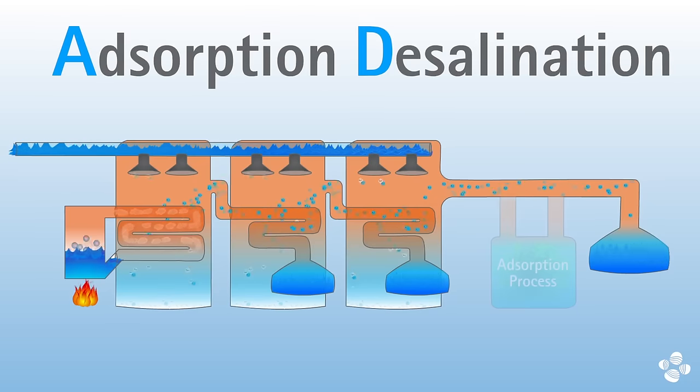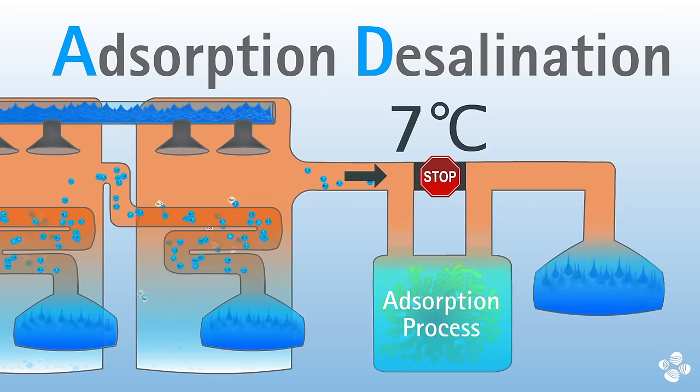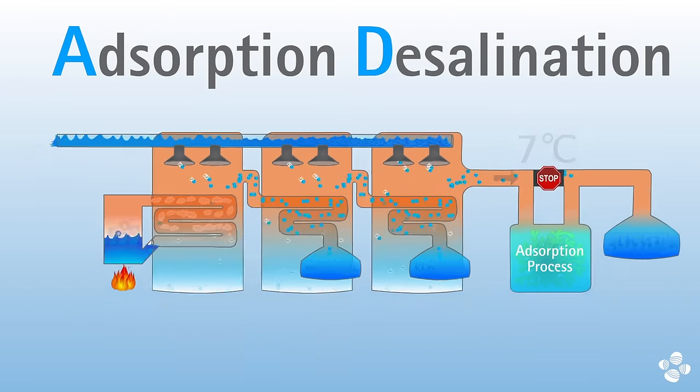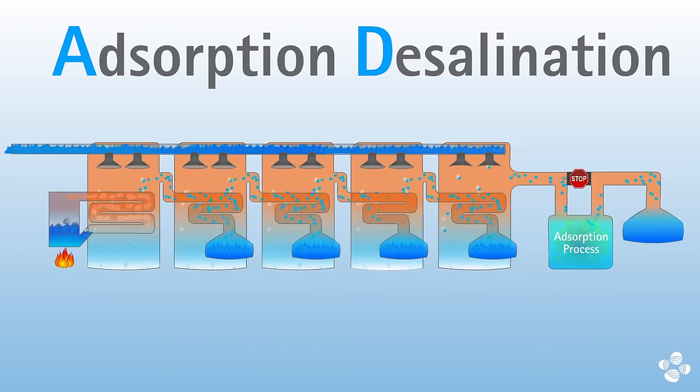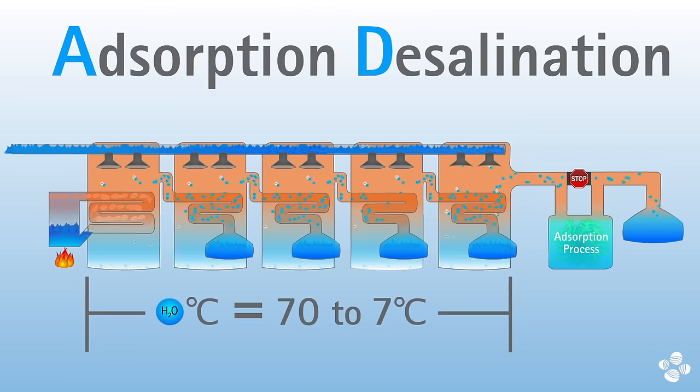The good news is that adsorption desalination breaks the limit and allows the output temperature to be lowered to 7 degrees. This means that the process can include several more stages, or that each stage can operate at a much larger temperature difference. Both of these possibilities mean more clean water.